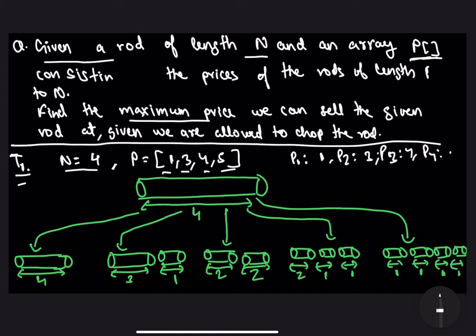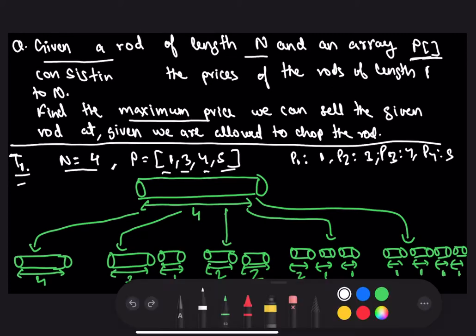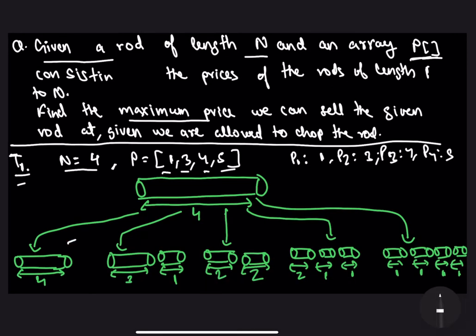These are all the different ways in which we can chop the rod into rods of smaller length and sell them. The first way is to sell the rod intact as it is, so the price will be P[4] = 5. The second way is to chop the rod of length 4 into two rods of length 3 and 1 each, so the price will be P[3] + P[1] = 4 + 1 = 5.